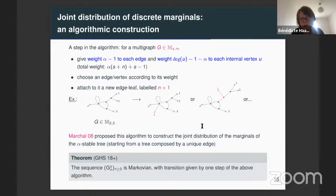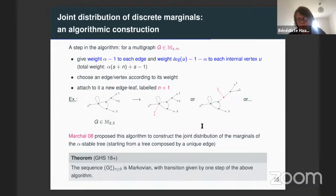Here, if we do the same but starting from the discrete kernel, we will obtain the joint distribution of our discrete marginals. I stated this result by saying that our sequence of discrete marginals is Markovian, with transition given by the step of this algorithm. This Markov property will be very useful to obtain further properties on our connected alpha-stable graph G_S.